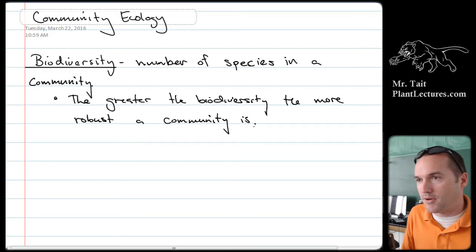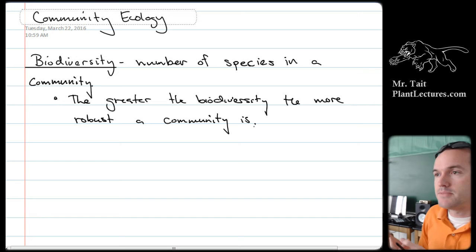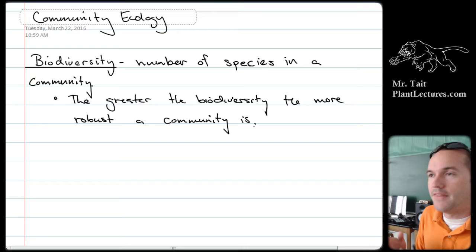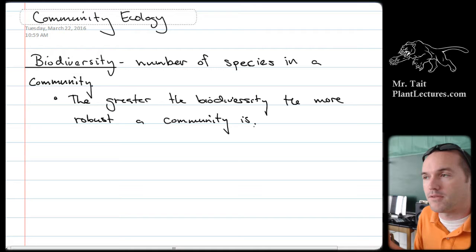But if you were in a community that had hundreds of different types of primary producers, it doesn't matter if a parasite comes in and wipes out just one of them, because the community can rely on the others. This exists at all levels of the food chain — the greater the number of species in that community, the more robust and able to deal with changes that community will be.